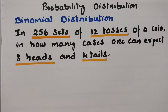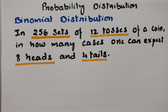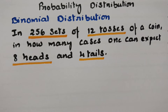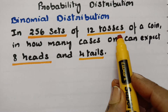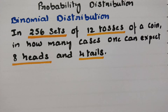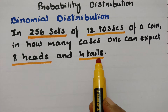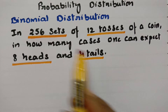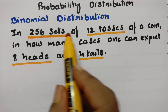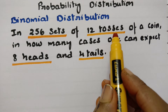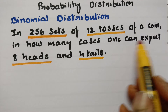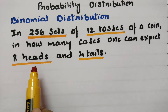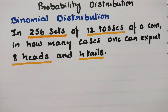This problem is related to the binomial distribution. The question here is: in 256 sets of 12 tosses of a coin, in how many cases can one expect 8 heads and 4 tails? So how many sets are there? 256 sets of 12 tosses of a coin.